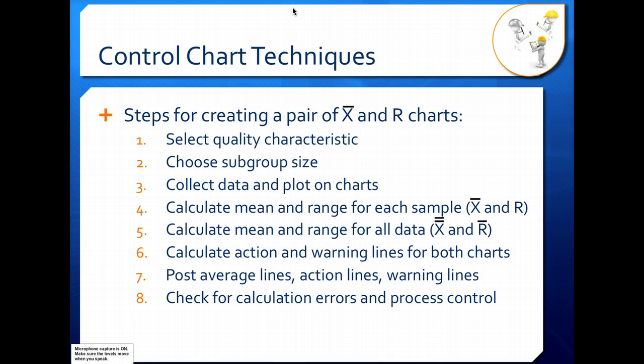Notice that the bar over our X and our R indicates some kind of average. So when we have the average of our averages, that's why we have the double bar on our X. The range is not an average, it's a range. It tells you how much spread is in your data. When you're taking the average of your ranges, that's when you have the bar over the R that's indicating you have an average.